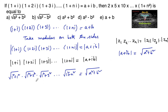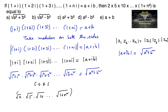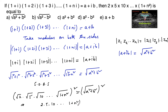Now squaring on both sides: root(1²+1²) that is root 2, whole square, into (1²+2²) that is 5, into (1²+3²) that is 10, and so on root(1+n²), whole square, is equal to root(a²+b²) whole square. Which implies that 2 into 5 into 10 into and so on (1+n²) is equal to a²+b².